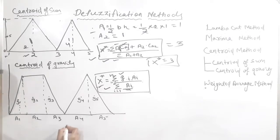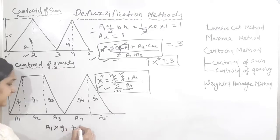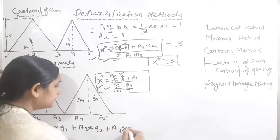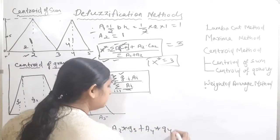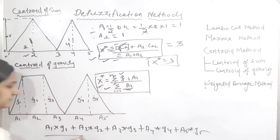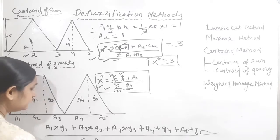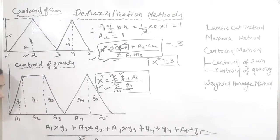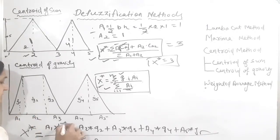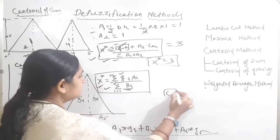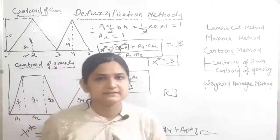For each of the five parts we calculate the centroid of gravity: G1, G2, G3, G4, and G5. The formula is x star equals the summation of Ai times Gi, for i equals 1 to 5, divided by the summation of all areas A1 through A5. The only difference between the two methods is that centroid of sum uses the midpoint centroid, while centroid of gravity uses the center of gravity of each sub-part.